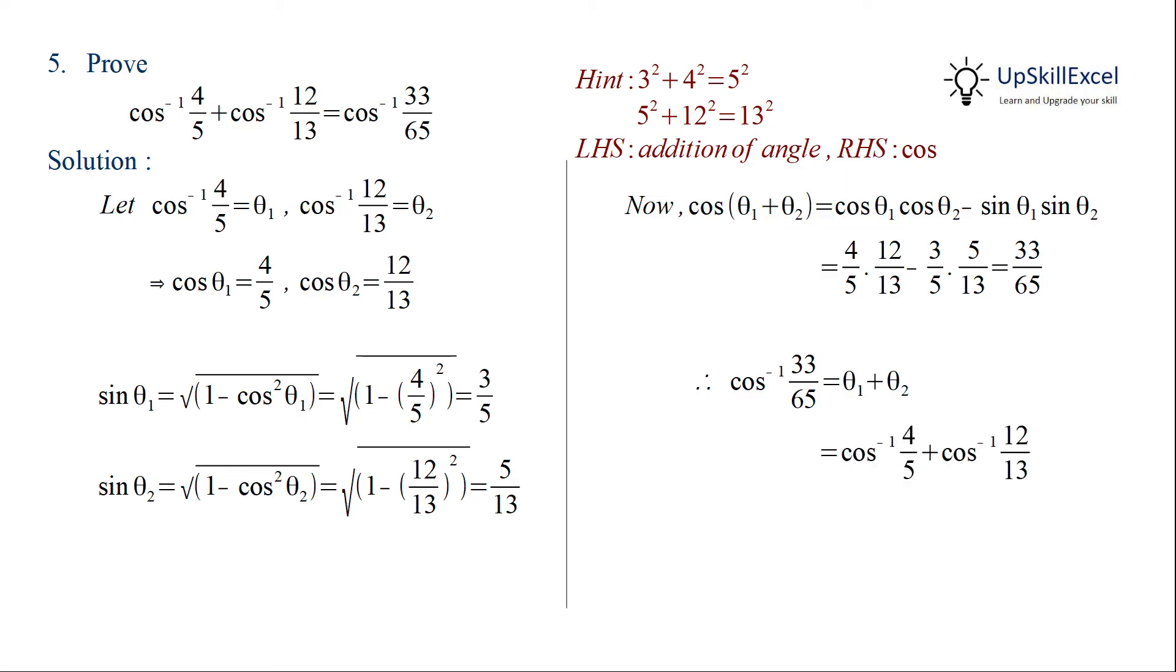On substitution we get cos inverse 4 by 5 plus cos inverse 12 by 13. Hence cos inverse 33 by 65 is equal to cos inverse 4 by 5 plus cos inverse of 12 by 13.